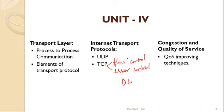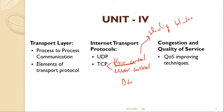In flow control we have seen the different protocols — stop and wait, go back N, etc. In the case of TCP, it will be using flow control with respect to sliding window. Error control will be similar — we will be using checksum in the case of error control with TCP. So TCP has both flow control and error control mechanisms.